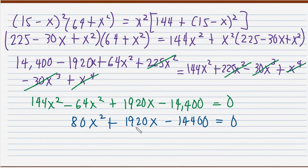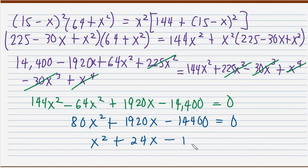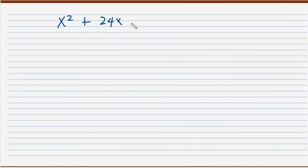Dividing the entire equation by 80 gives X squared plus 24X minus 180 equals zero. We now have a quadratic equation to solve.